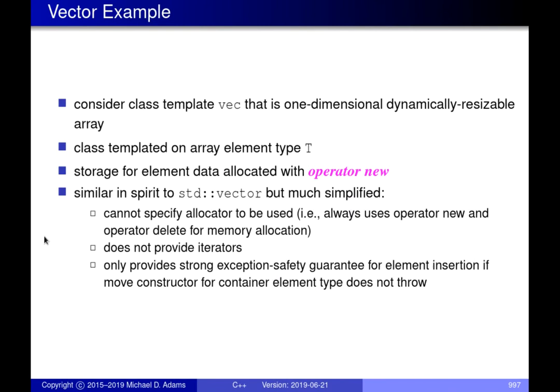We're carrying on from where we left off in the last lecture, which was looking at examples of code using things like operator new, operator delete, placement new, and so on. The example we're going to consider here is something similar to the std::vector class in the standard library. It provides a one-dimensional dynamically resizable array, so you can grow the size of the array at runtime as the container is being used.